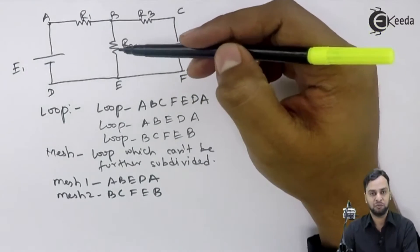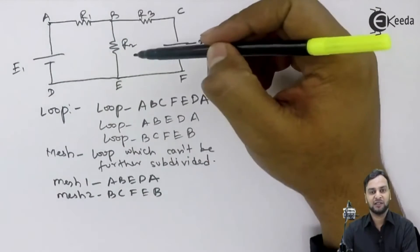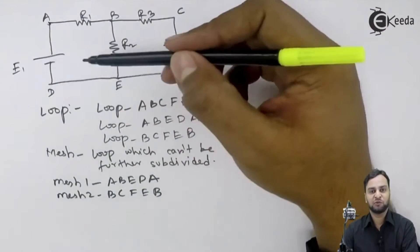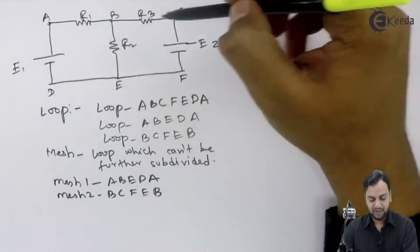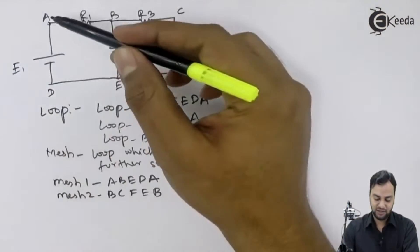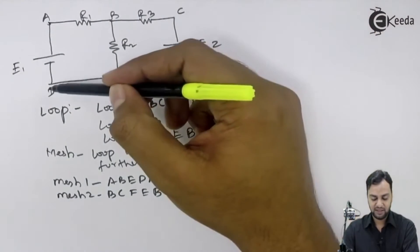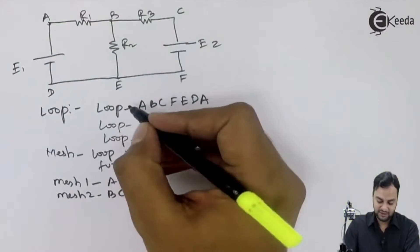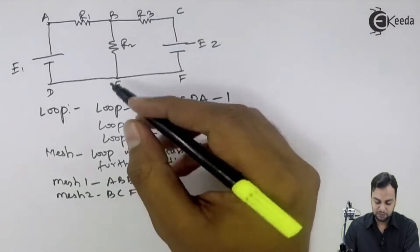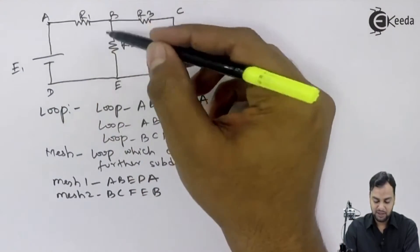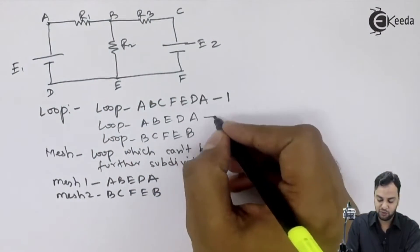Prior to mesh, there is a loop. So first we will identify what are the loops in this circuit. A loop is any closed path that is there in the circuit. How many closed paths are there in this circuit? A-B-C-F-E-D-A — this is one loop, loop 1. Another closed path is A-B-E-D-A, this is one complete loop, so this is loop 2.